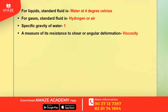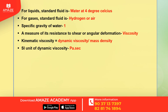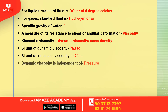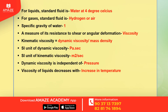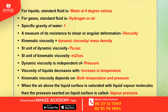A measure of its resistance to shear or angular deformation is viscosity. Kinematic viscosity is equal to dynamic viscosity divided by mass density. The SI unit of dynamic viscosity is Pascal second and SI unit of kinematic viscosity is meter square per second. Dynamic viscosity is independent of pressure. Viscosity of liquid decreases with increase in temperature — viscosity is inversely proportional to temperature. Kinematic viscosity depends on both temperature and pressure.